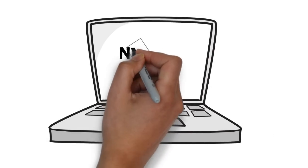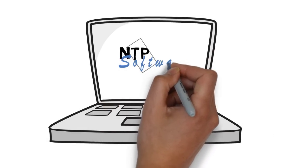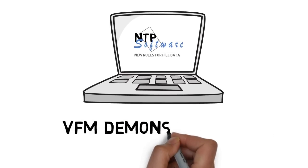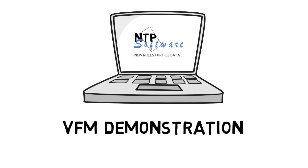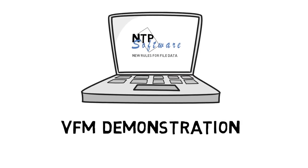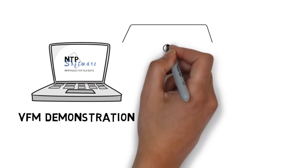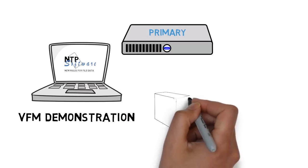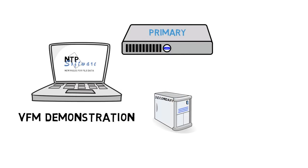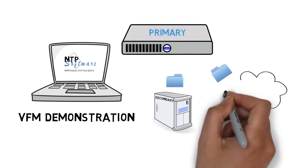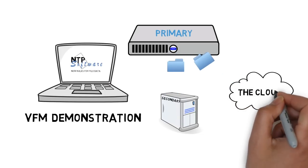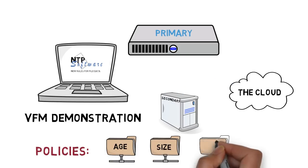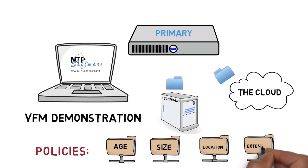Hi and welcome to the NTP Software VFM demonstration. VFM is a product that will tier file data from primary tier storage out to cheaper secondary tier storage or even the cloud, based upon policies set forth in the product itself. These policies can be based on the age, size, location, or even the extensions of files.